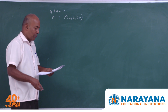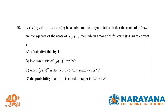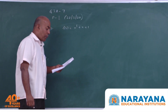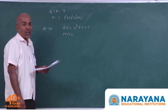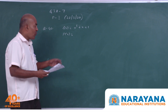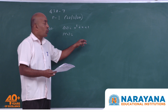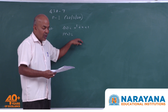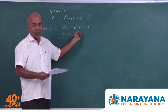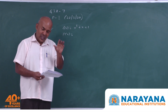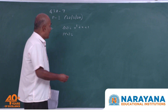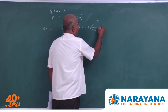Question 40: f(x) = x³ + x + 1, and p(x) is a cubic monic polynomial whose roots are the squares of the roots of f(x) = 0. If f(x) has roots α, β, γ, then by Vieta's formulas: α + β + γ = 0, αβ + βγ + γα = 1, and αβγ = −1.